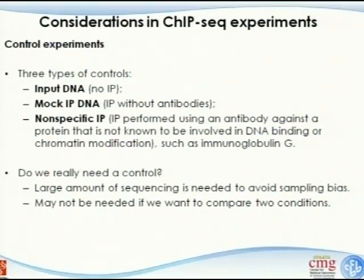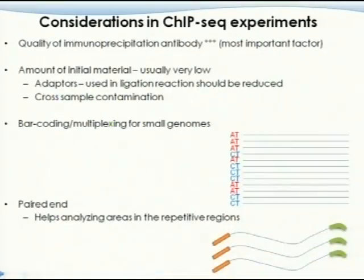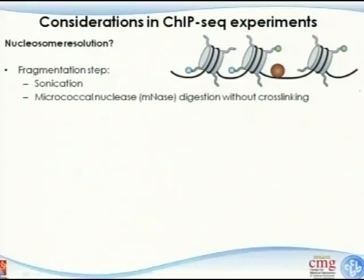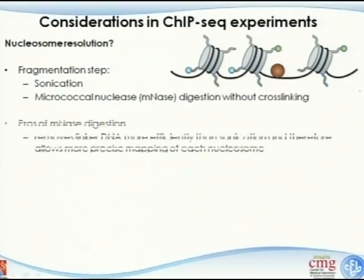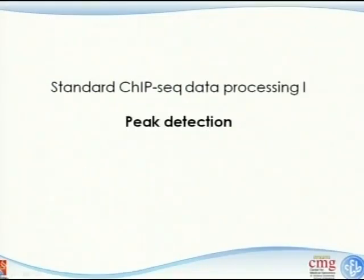To summarize experimental considerations: antibody quality, initial material quantity, barcoding and paired-end sequencing, sequencing depth evaluation, nucleosome resolution from fragmentation method choice (sonication vs. enzyme digestion), and control sample selection.